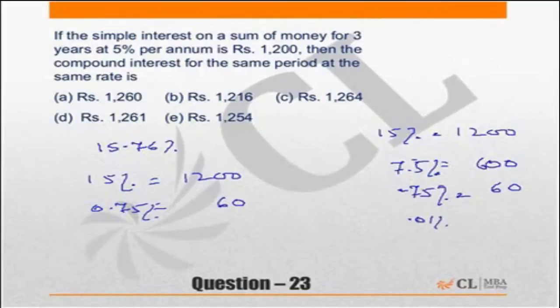Okay, again look at this: 15% is 1,200. This implies 10% should be two-thirds of this, so 24 divided by 3 is about 800.